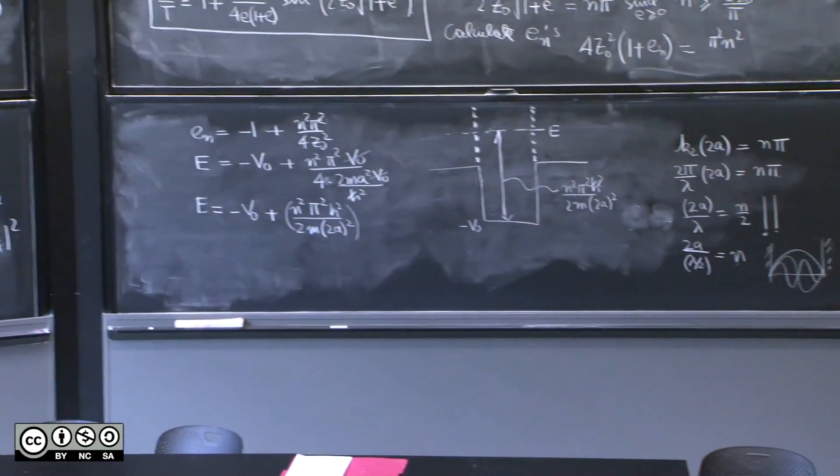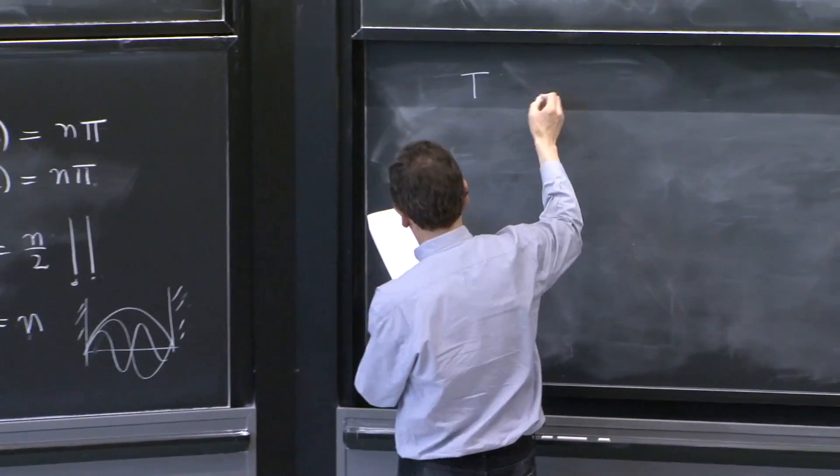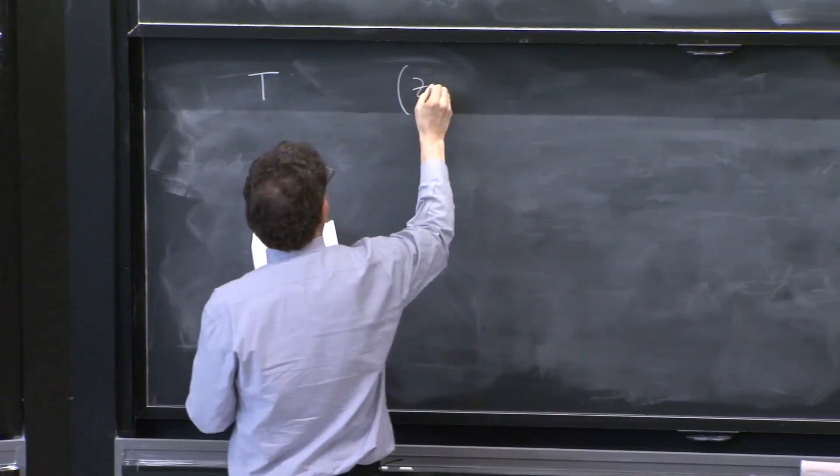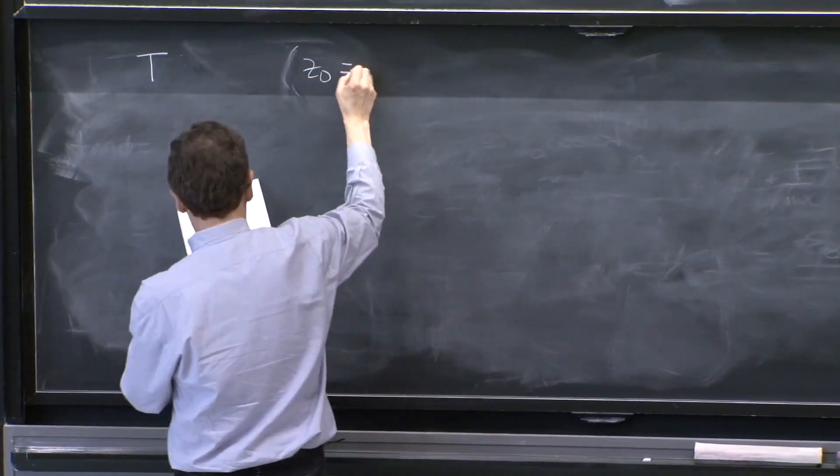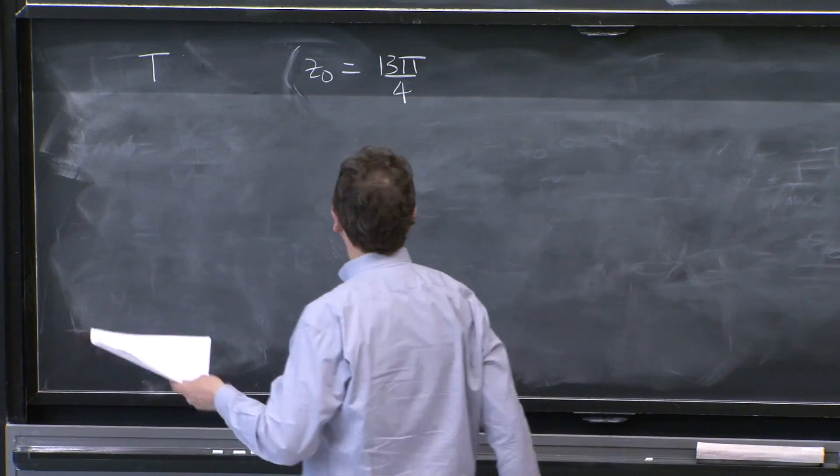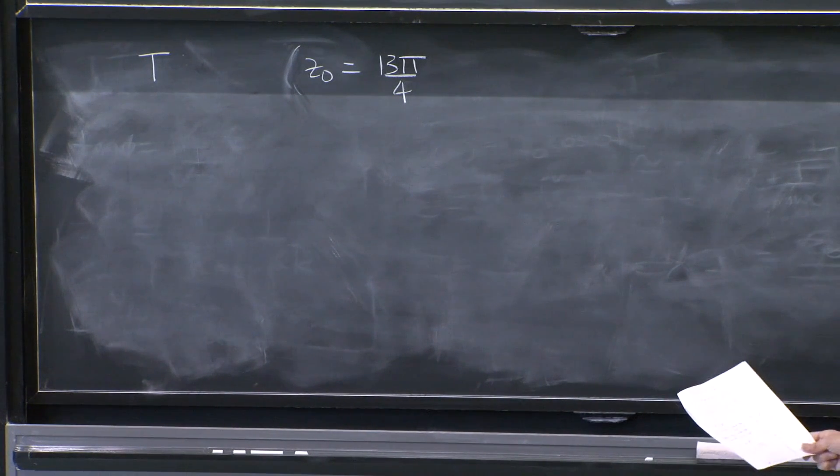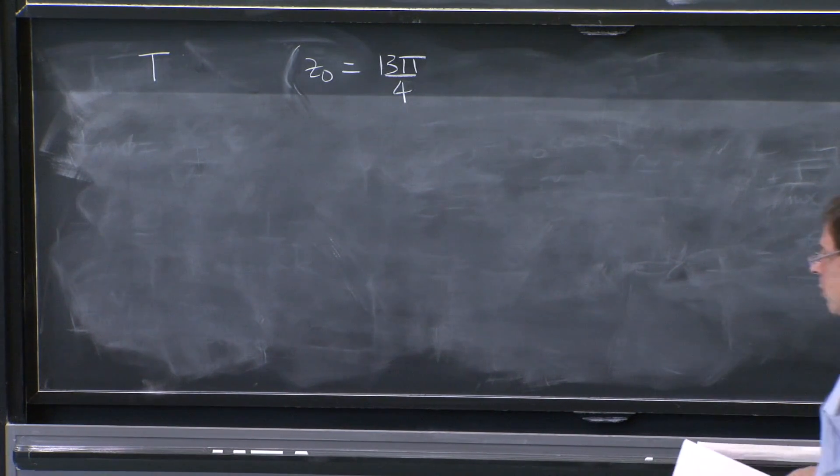If you have a potential, the transmission coefficient for a potential for z0 is equal to 13 pi over 4. That's a square well of certain depth. And we've represented it this way.